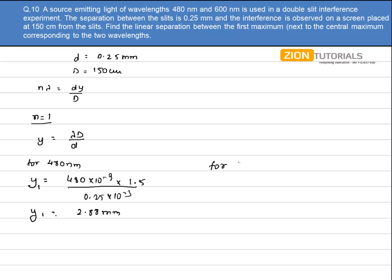This gives 1.5 divided by 0.25 × 10⁻³, so y₁ = 2.88mm. Similarly for 600nm, y₂ = 3.6mm.